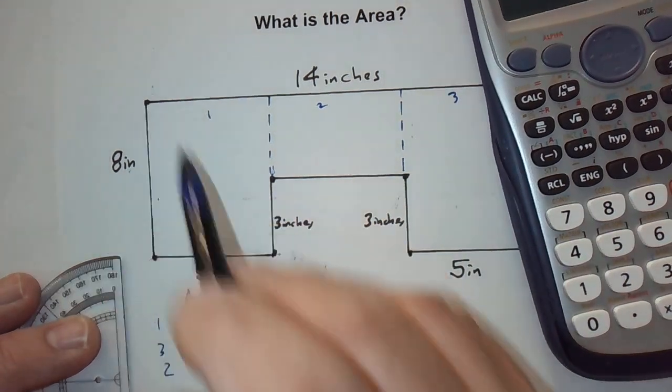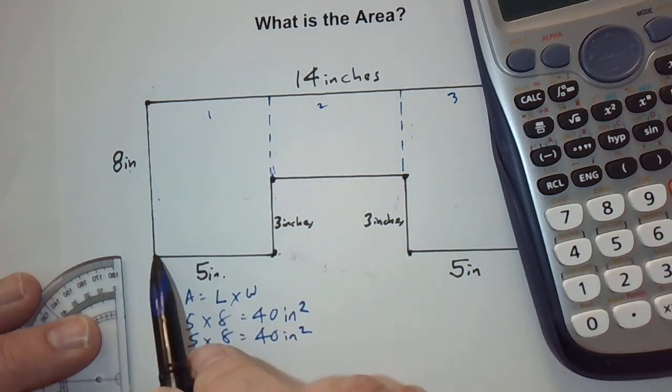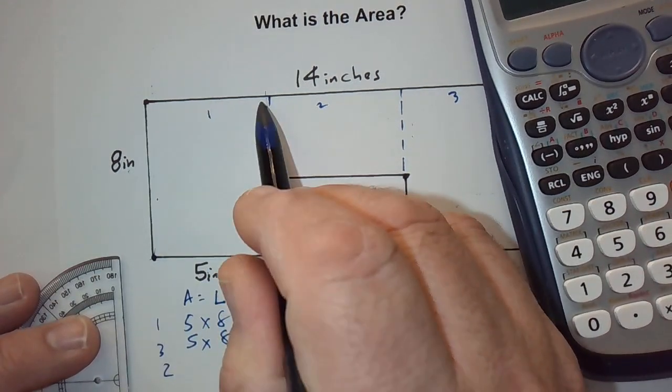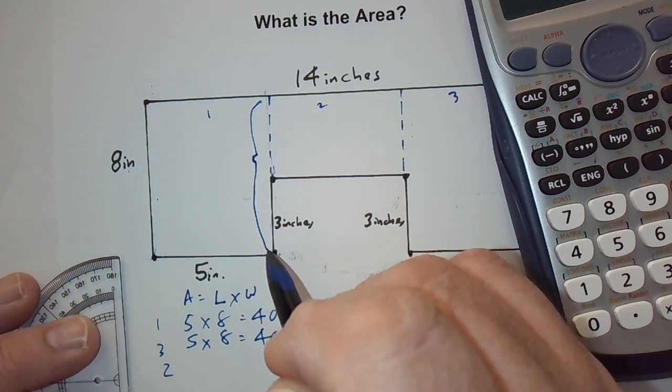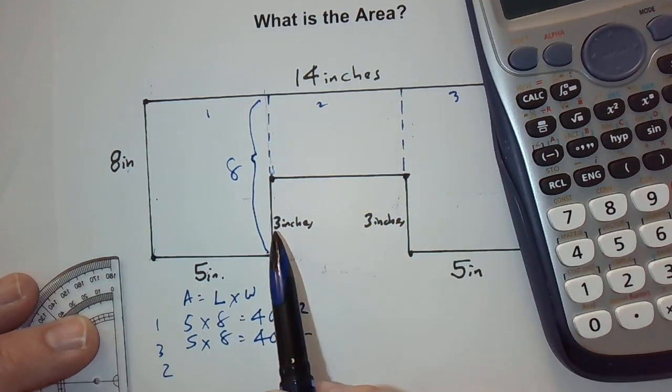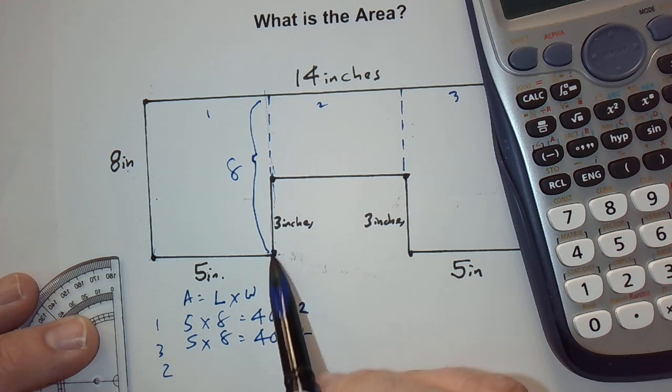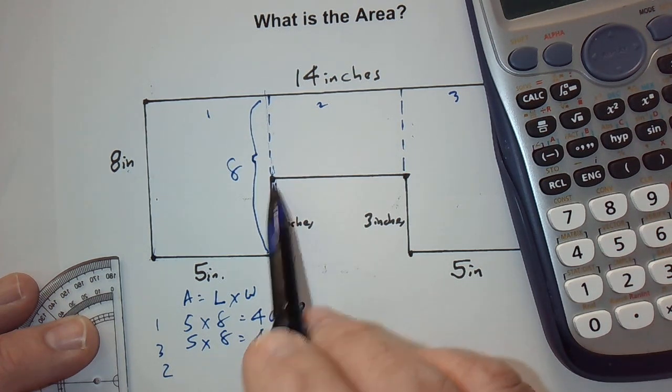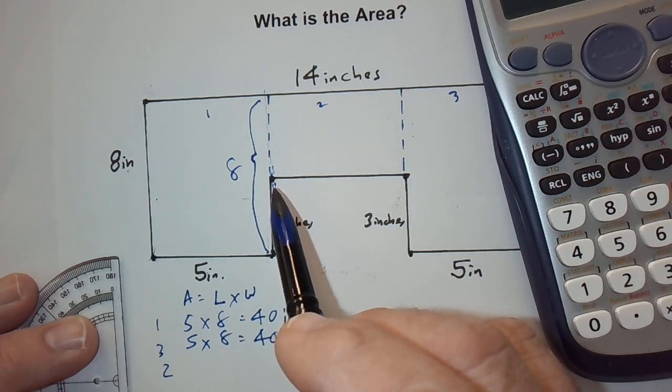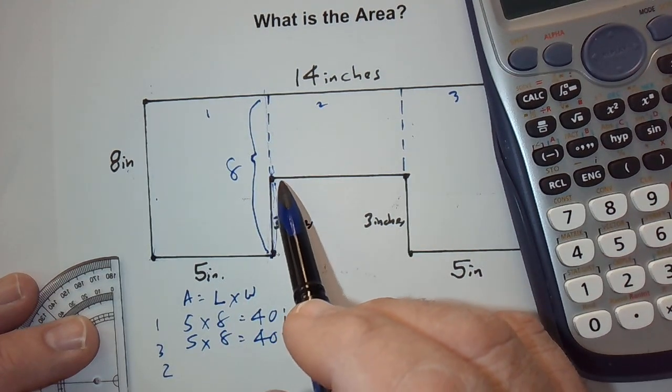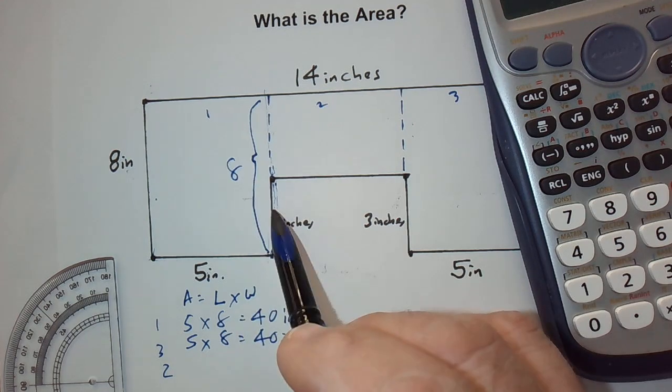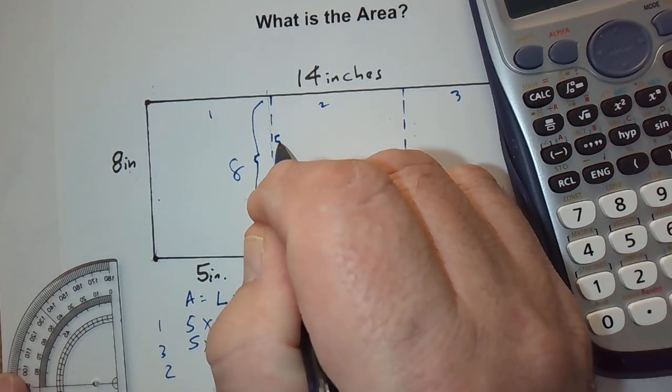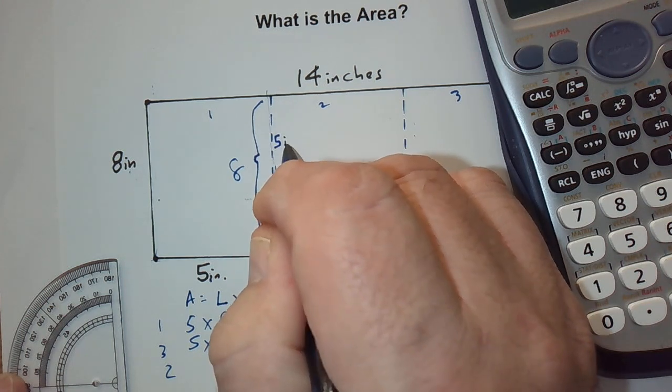Well, we know this entire distance from down here to the top is going to be the same as here. So, this entire distance is eight inches. We know this bottom part here is three. So, if this part is three and the whole thing is eight, how do we find it? Well, we subtract. We subtract three from eight. So, that means this part here, the dotted line part, is five inches.